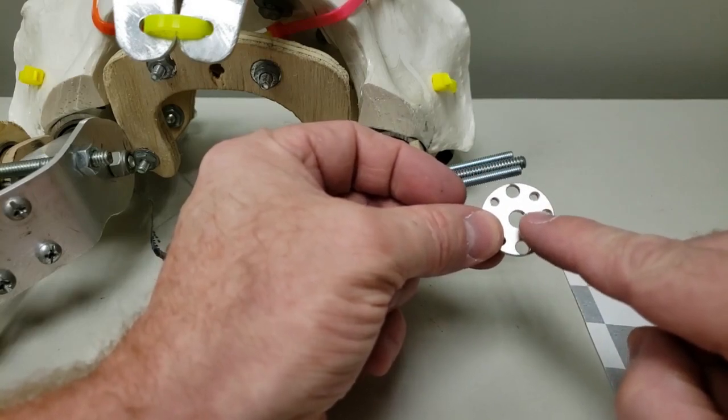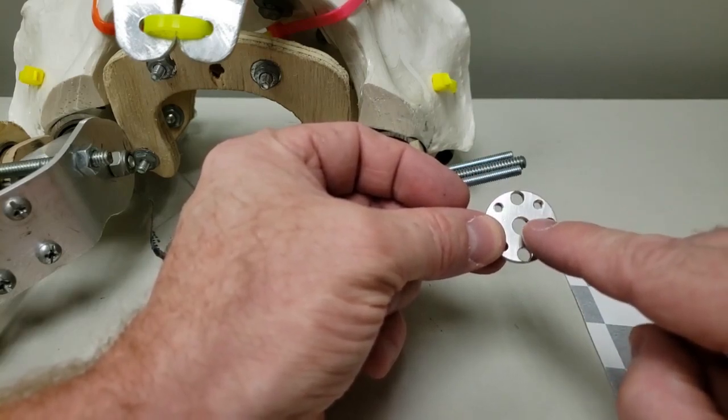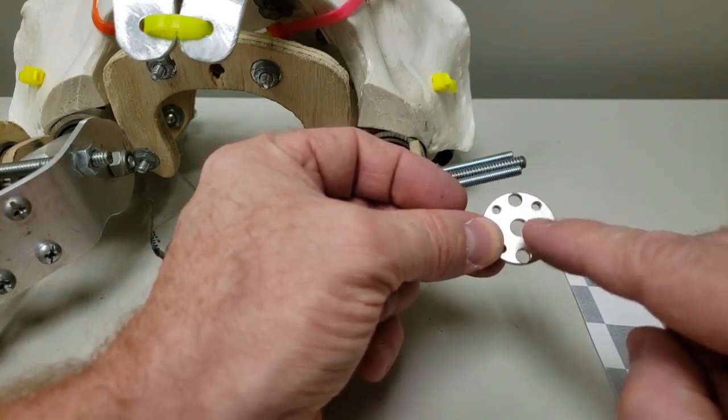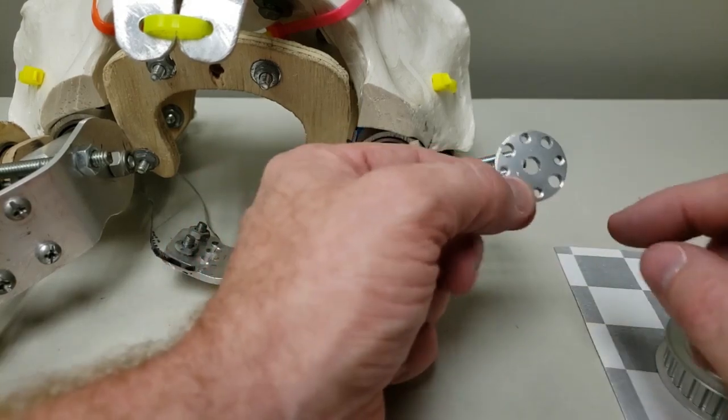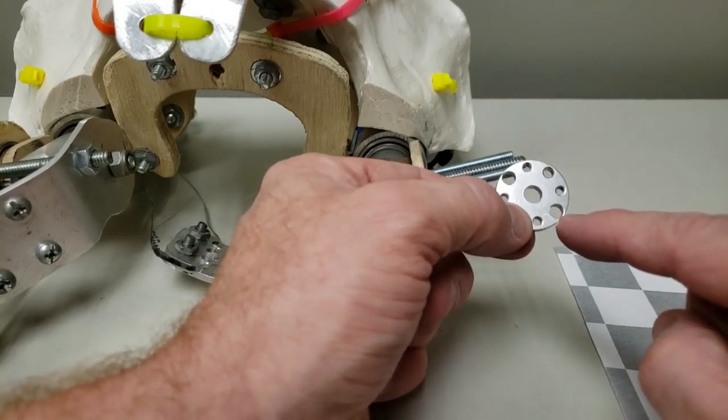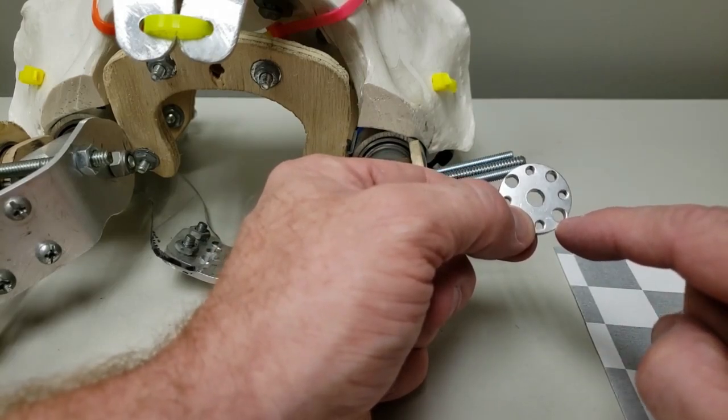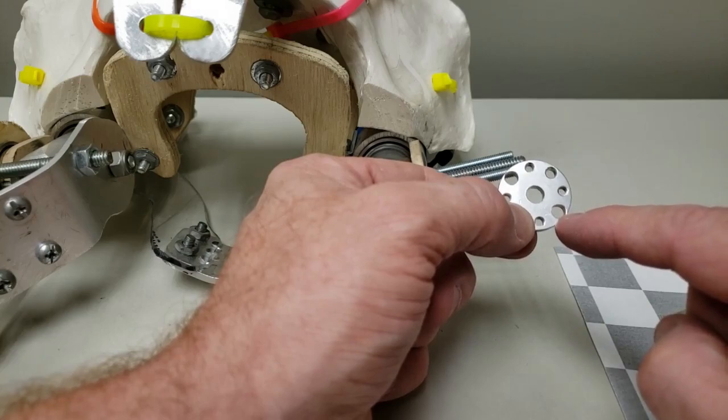I ended up drilling out this center hole to a quarter inch. It was originally for a number six hole, which is 9/64ths. And then two of these on the left and right side here, I drilled these out to three sixteenths for the number ten.